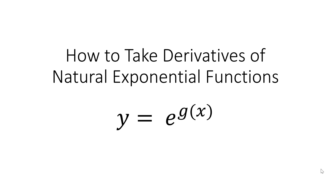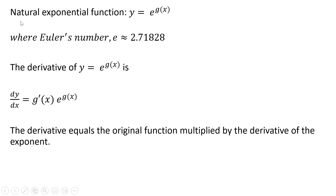Hello. In this video we're going to look at how to take derivatives of natural exponential functions. Let's take the following natural exponential function: y equals e raised to the g of x function, where Euler's number e is approximated by the following constant.